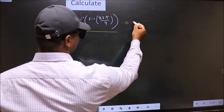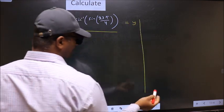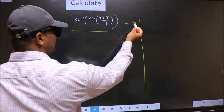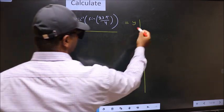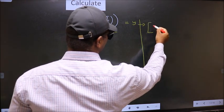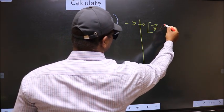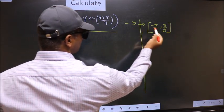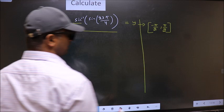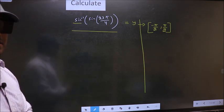So let us take the answer to be y. And the condition is y should lie in the range of sin inverse which is minus pi by 2 to plus pi by 2. Our answer should lie in this interval. Clear with this point.